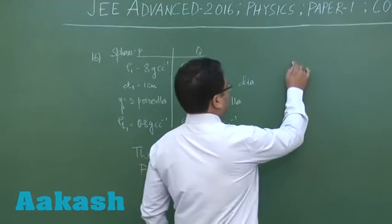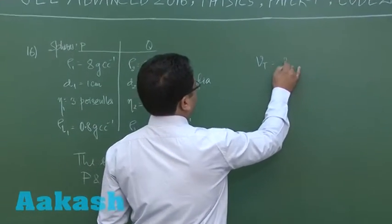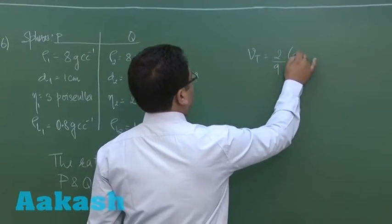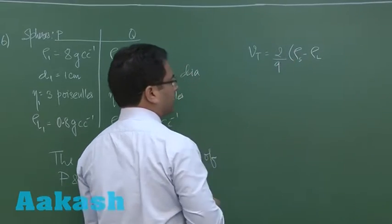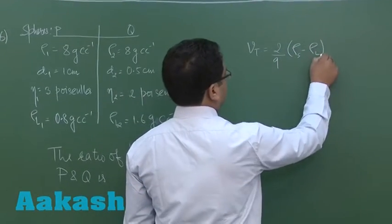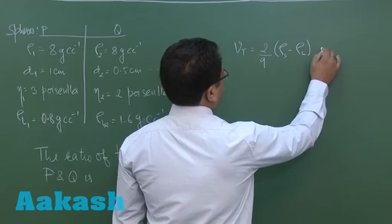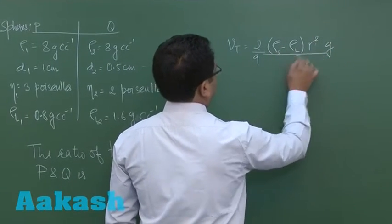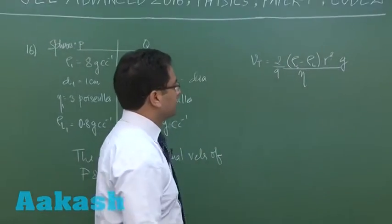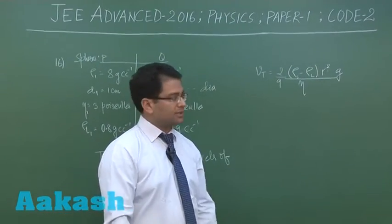The expression of terminal velocity: 2 by 9, rho S minus rho L—rho S you may write more specifically as density of solid, density of liquid—and R squared G divided by eta, that is the expression where R is the radius and eta is the coefficient of viscosity.